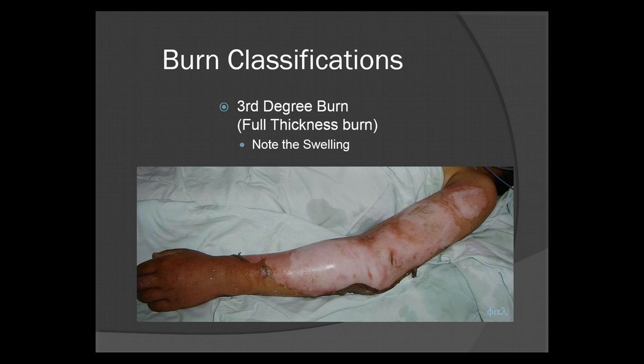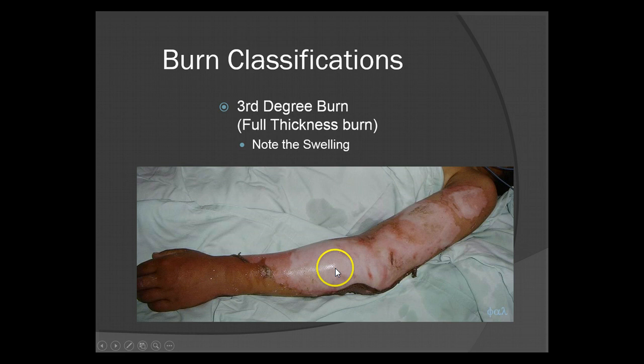Third degree burn is a full thickness burn. Note the swelling and the underlying soft tissue — there's nothing left. The body is trying to send that inflammatory response to fight any infection or bacteria entering the body through this. These are very, very critical burns. Notice the skin is sloughing off. Just keep in mind this patient really isn't in much pain, simply because their nerve endings are fried.